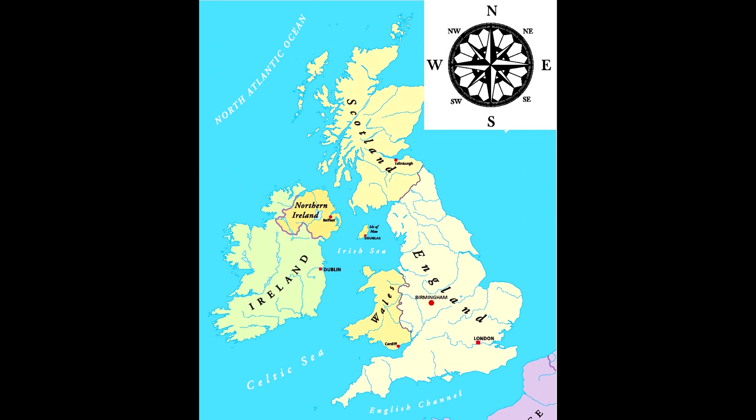For instance, if we look at this map of the UK — if we are going to describe the location of London, we would say London is in the South-East of the UK. Or if describing Wales, we would say Wales is to the West of England.